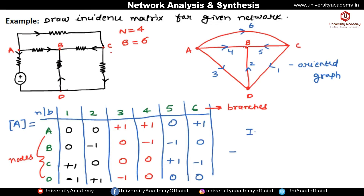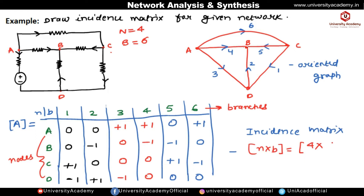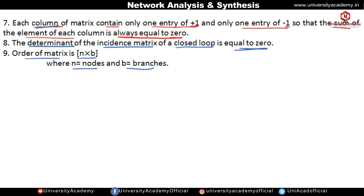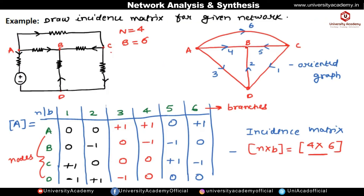Node C is not connected with node B and node D for branch six. This completes the incidence matrix. Its order is n cross b — four nodes and six branches — so the order is four cross six. Verifying the property: the sum of the first column is plus one and minus one, which equals zero. Every column sum is zero, confirming the property is satisfied and the matrix is drawn correctly.